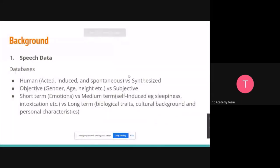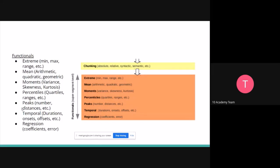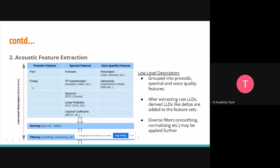The next background topic is acoustic feature extraction, which was part of Task One. When dealing with acoustic extraction and modeling, we work in terms of phonemes and graphemes. The model follows a hierarchy of low-level descriptors, then added feature sets, then functional features. Low-level descriptors are grouped into three main parts: prosodic features, spectral features, and voice quality features.